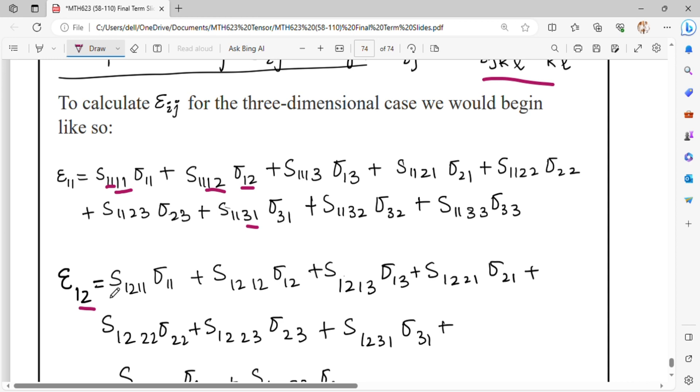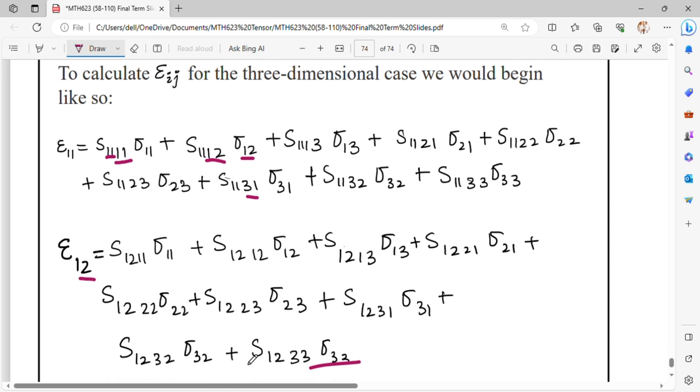You can write the matrix form where for fixed ij, the kl indices vary through all nine combinations. In this way, you can calculate any epsilon_ij component. This is from the MTH 623 Tensor Analysis syllabus. I hope your concept is now clear.